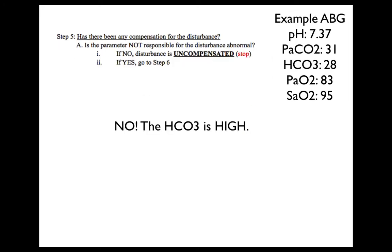Step five: has there been any compensation for the disturbance? Is the parameter not responsible for the disturbance abnormal? We know that the carbon dioxide is responsible for our disturbance because we have a respiratory acidosis. So let's look at the bicarb. Is the bicarb abnormal? Yes. Our bicarb is abnormally high at 28. Therefore, we know that this is somewhat compensated.